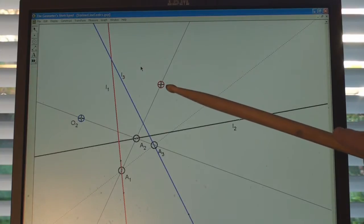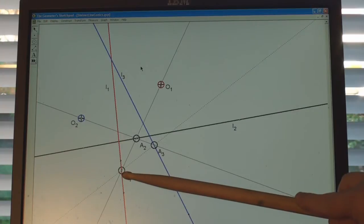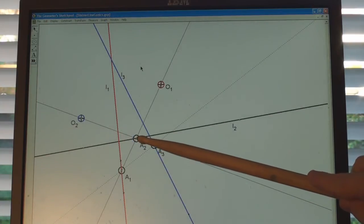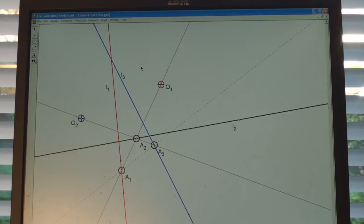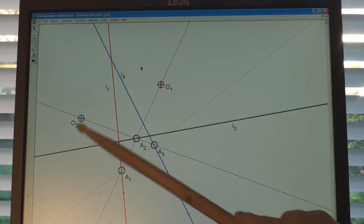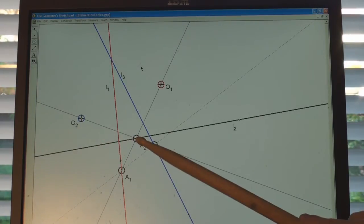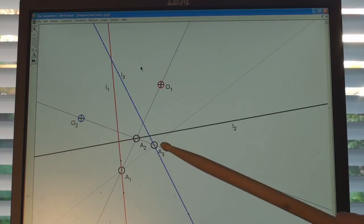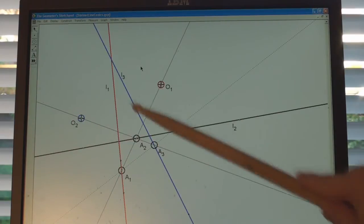The first, with center O1, takes points on L1 and transforms them to points on L2, this intermediate black line. The second, with center O2, takes a point on L2 and associates it to a point on L3.